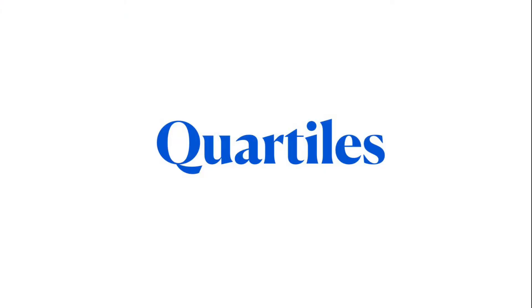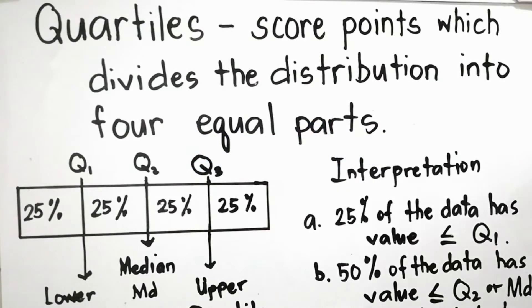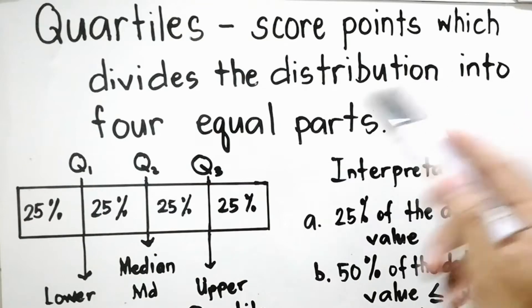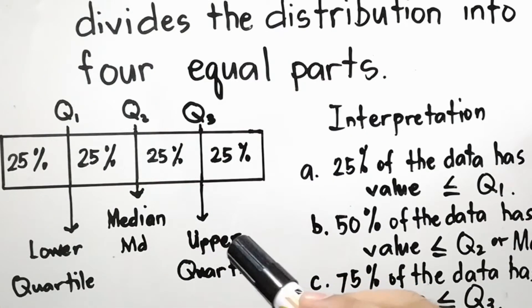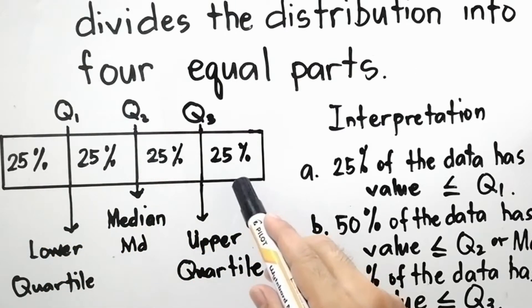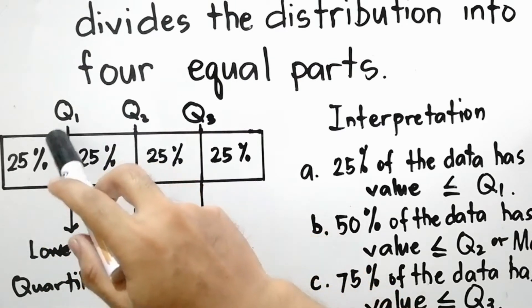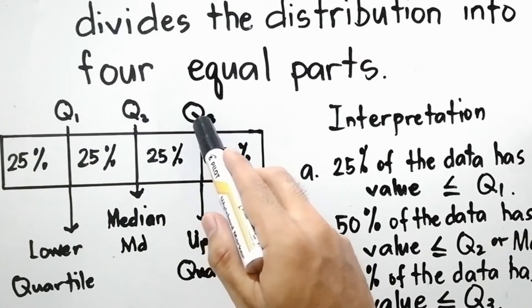Hi everyone, welcome back to my YouTube channel. Today we will discuss measures of position of ungrouped data. Let's start with quartiles. Quartiles are score points which divide the distribution into four equal parts. As you can see in the illustration, each part contains 25 percent. The score points are the first quartile, the second quartile, and the third quartile.